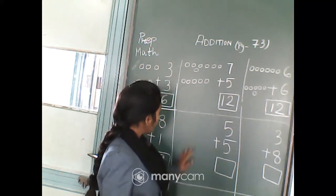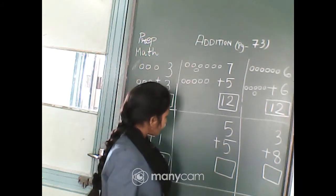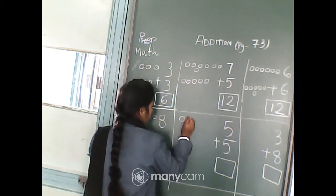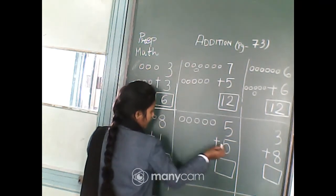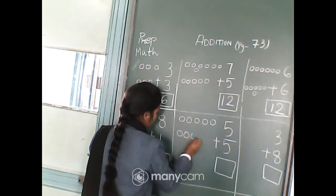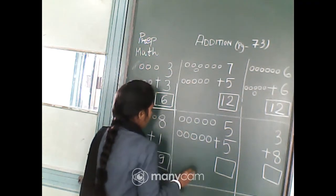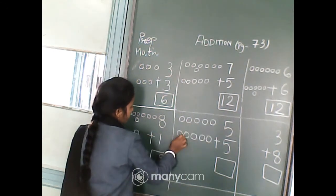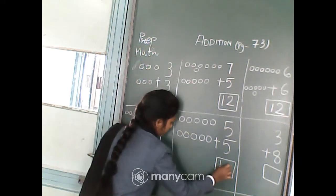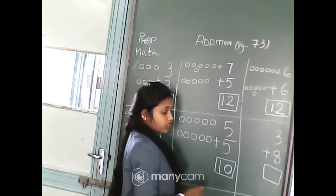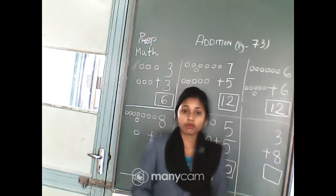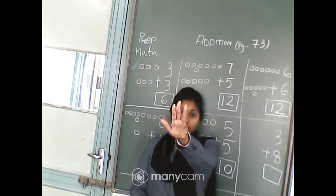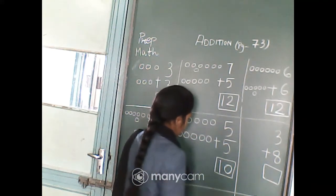Now 5th one: 5 plus 5. So we will draw 5 circles: 1, 2, 3, 4, 5. Again we will draw 5 circles: 1, 2, 3, 4, 5. Now we will count 5 plus 5: 1, 2, 3, 4, 5, 6, 7, 8, 9, 10. So after 5 we will count more 5 fingers: 5, 6, 7, 8, 9, 10. So 5 plus 5 equals 10.